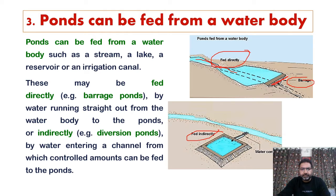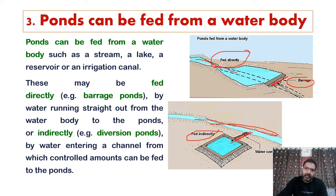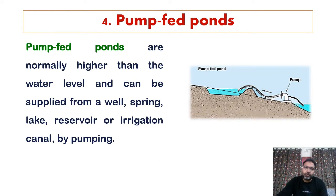The other kind are indirectly fed ponds, also called diversion ponds, where a stream, river, rivulet, or brook flows alongside the pond and we divert the water through a channel into the pond indirectly — that is why we call them indirectly fed ponds.